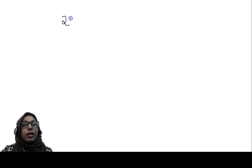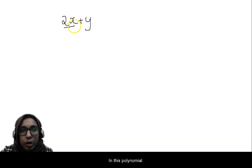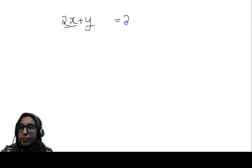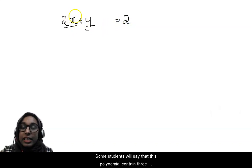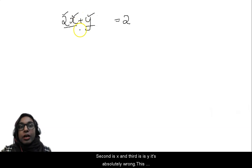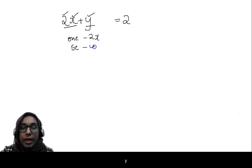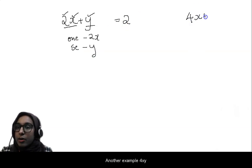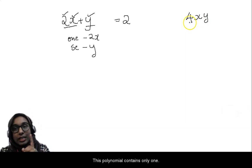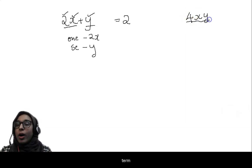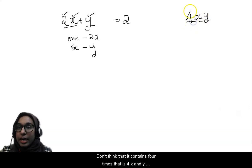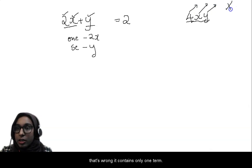To understand terms, I will explain with one example: 2x plus y. In this polynomial it contains two terms. Some students will say this polynomial contains three terms — one is 2, second is x, third is y — that's absolutely wrong. This polynomial contains only two terms: one term is 2x, second term is y. Another example: 4xy — this polynomial contains only one term. Don't think it contains three terms; that's wrong.